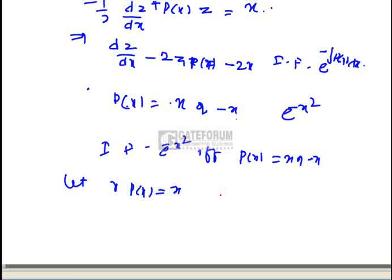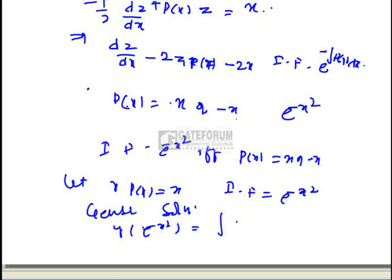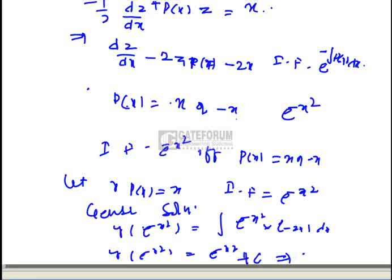Let p(x) equal x. Then the integrating factor is e^(minus x²). The general solution is z times e^(minus x²) equals the integral of e^(minus x²) times (minus 2x) dx. Integrating this gives z times e^(minus x²) equals e^(minus x²) plus some constant c.